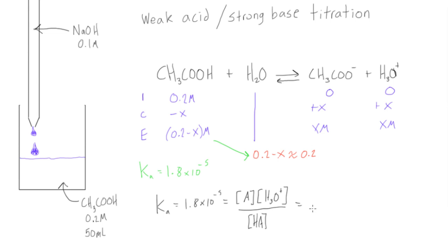Long story short, we can say this will be x times x, which is x squared, over the concentration of our reactants, which we said 0.2 minus x is pretty much 0.2. Multiply 0.2 times 1.8 times 10 to the negative 5, take the square root. If we do that in our calculator, we're going to find that x is equal to...